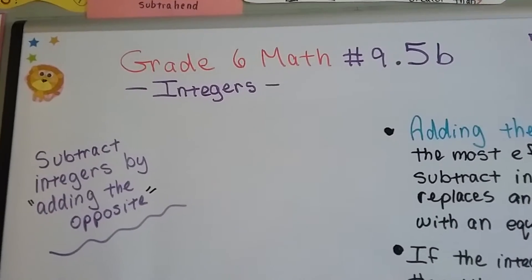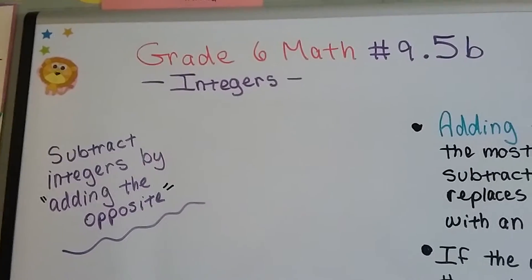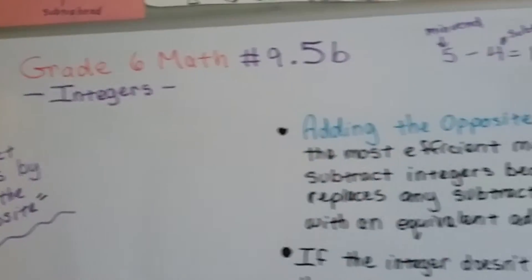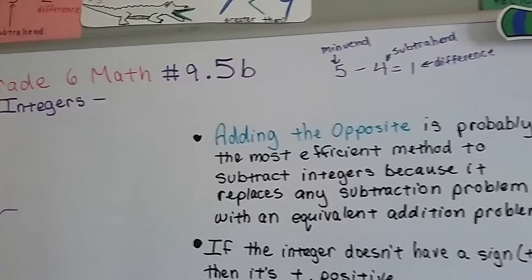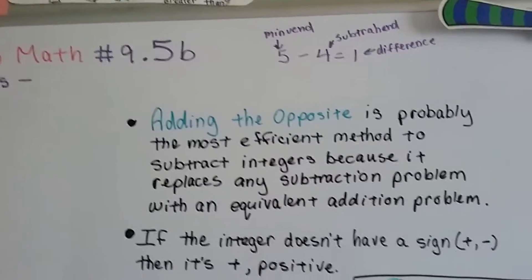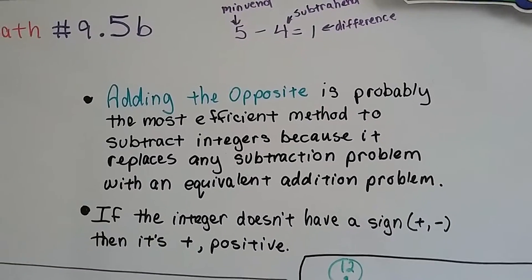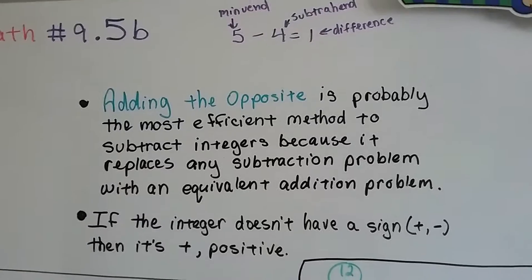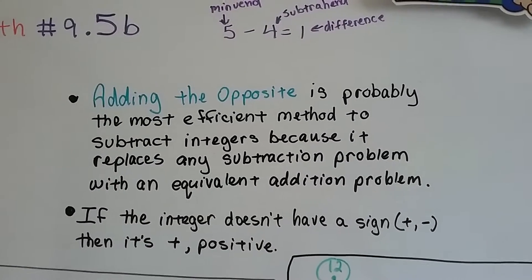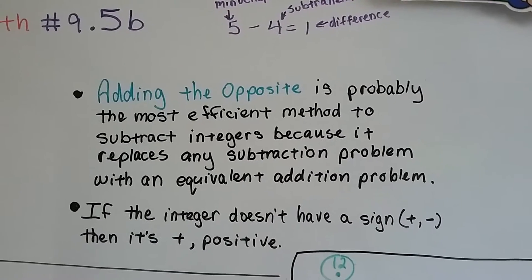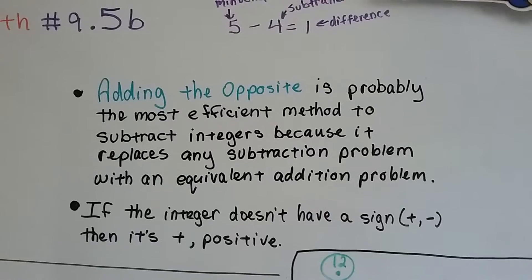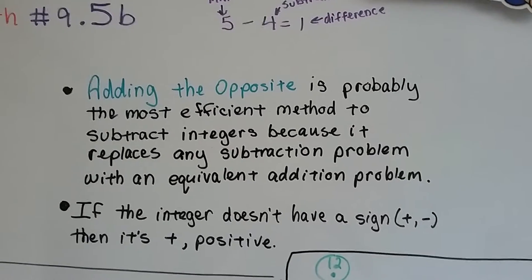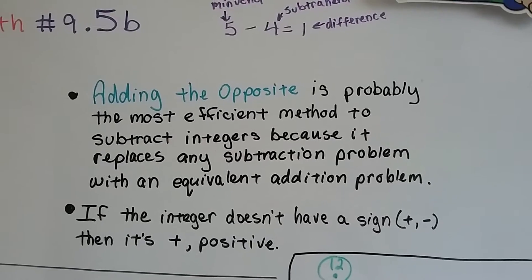Grade 6 math, number 9.5b: subtract integers by adding the opposite. This is my last video for sixth grade on subtracting integers. One of the methods to subtract integers is adding the opposite — it's probably the most efficient method because it replaces any subtraction problem with an equivalent addition problem.